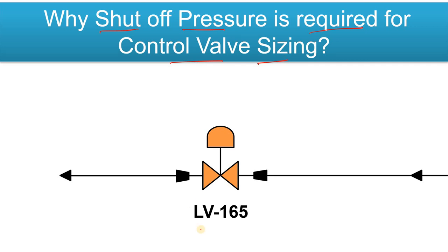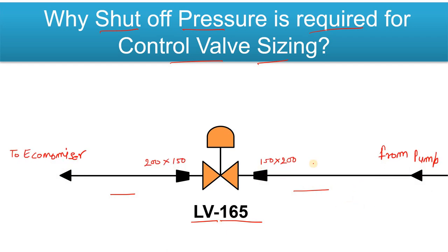On the screen you can see one pipeline. In this pipeline there is LV-165, a level control valve. The fluid — let's suppose BFW, boiler feed water — is coming from the pump. The line size of this pipe is 200, then there is a reducer to 150, and then an expander from 150 back to 200. This is your level control valve, and this BFW is going to the economizer.